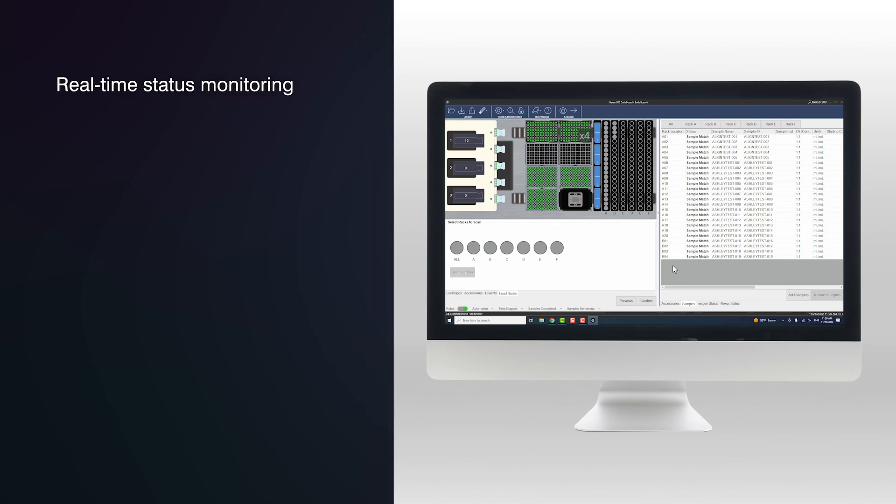Run information can be viewed in the Nexus 200 and NextGen status tabs. Users can hover over multiple locations on the deck view to highlight information about the corresponding accessory or sample and its status, which allows for real-time status monitoring of the runs.